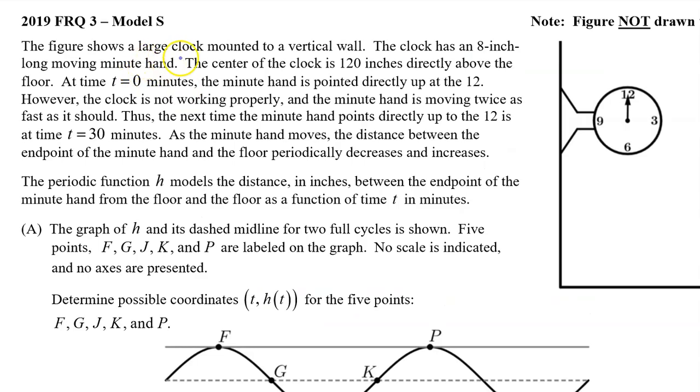The figure shows a large clock mounted to a vertical wall. The clock has an 8-inch long moving minute hand. The center of the clock is 120 inches directly above the floor. At time t equals 0 minutes, the minute hand is pointed directly up at the 12. However, the clock is not working properly and the minute hand is moving twice as fast as it should.